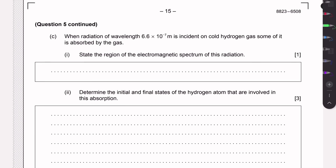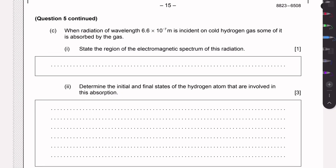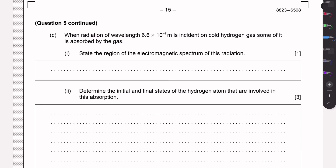Part C: we have radiation of wavelength 660 nm that is incident on a cold hydrogen gas, and some of it is absorbed. We need to state the region of the electromagnetic spectrum this wavelength is in. This is the visible region. Converting to nanometers: 660 nm. The visible spectrum is usually between 380 and 700 nanometers, so any wavelength in that range is visible.